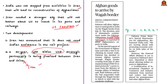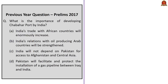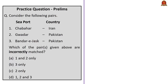Let's take up the UPSC Prelims question: 'What is the importance of developing Chabahar Port by India?' The correct answer is option C: India will not depend on Pakistan for access to Afghanistan and Central Asia. Now let's take up one more relevant practice question on Chabahar port, Gwadar port, and Bandar-e-Jask port — asking which pairs are incorrectly matched.